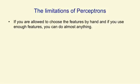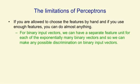If you're allowed to choose the features by hand and if you use enough features, you can make a perceptron do almost anything. Suppose, for example, we have binary input vectors and we create a separate feature unit that gets activated by exactly one of those binary input vectors. We'll need exponentially many feature units, but now we can make any possible discrimination on binary input vectors. So for binary input vectors, there's no limitation if you're willing to make enough feature units.